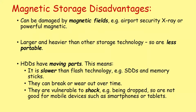However, there are disadvantages to magnetic storage. They can be damaged by magnetic fields — for example, airport security, x-rays, or any sort of powerful magnetic field. They're typically larger and heavier than other storage technology, and a lot less portable. Hard disk drives also have moving parts, which means they're slower than solid state technology — for example, your solid state drive or your memory stick. They can break or wear out over time, and they're also vulnerable to shock — being dropped, shaken or moved around. So hard disk drives and magnetic storage are not very suitable for mobile devices such as smartphones or tablets.